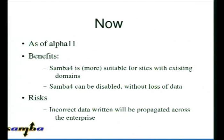As of Alpha 11, we can do that. Samba is much more suitable for existing domains because we can join into the bidirectional replication stream. That means we can turn off a Samba 4 domain controller and everything else in the network should still keep working. It's still possible that Samba may write incorrect data and replicate it to your replication partners, so it's not foolproof, but it's an improved situation.